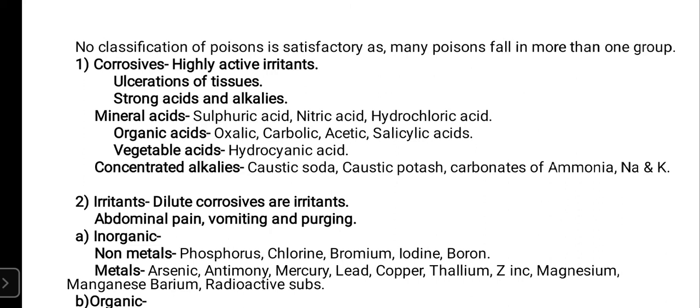The other group of corrosives is concentrated alkalis. So two groups: strong acids and strong alkalis. Strong acids are divided into mineral, organic, and vegetable acids. Concentrated alkalis include caustic soda, caustic potash, and carbonates of ammonia, sodium, and potassium — sodium hydroxide, potassium hydroxide, ammonium carbonate, sodium carbonate, and potassium carbonate. These are all considered corrosive in nature when in concentrated form; when diluted with water, they become irritants.